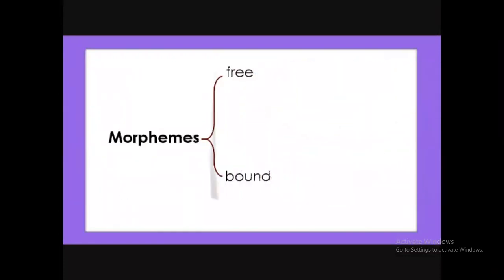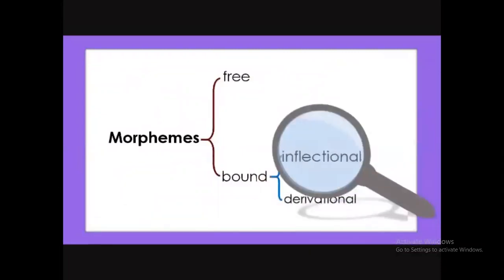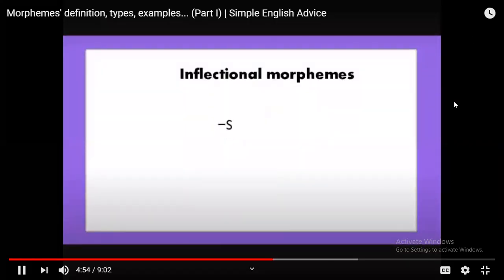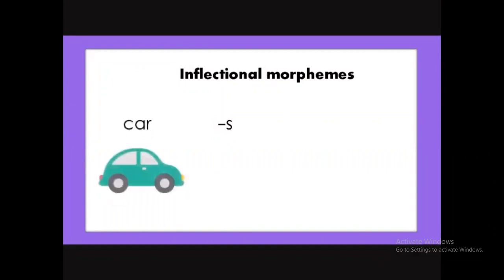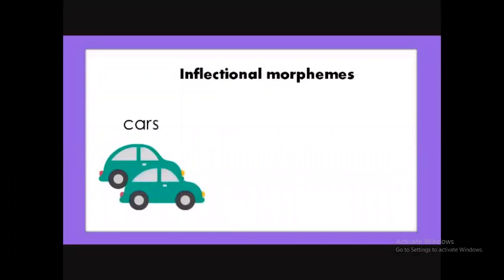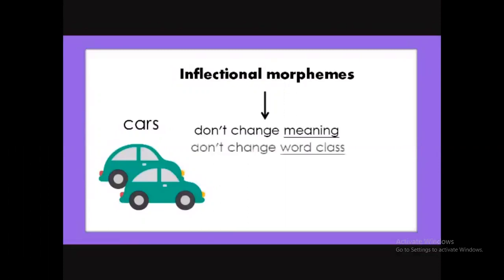Bound morphemes are classified into two subcategories: inflectional morphemes and derivational morphemes. Inflectional morphemes are those that, when you add them to a word, they don't change the meaning or the word class. For example, the morpheme '-s.' When you add it to a word, it changes the word from singular to plural. Consider the word 'car' — adding the morpheme '-s,' you have 'cars.' Does it change the meaning? No. Does it change its role in the sentence? No — it used to be a noun and it keeps being a noun.